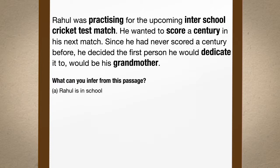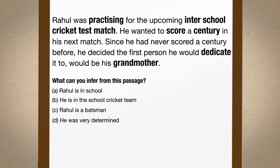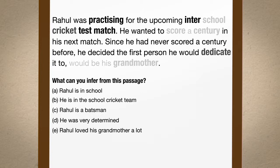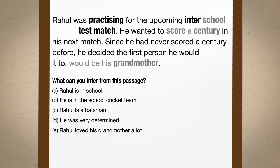Rahul is in school. He is in the school cricket team. Rahul is a batsman. He was very determined. Rahul loved his grandmother a lot. Even though the information is not clearly detailed, we can use the information that is given to deduce or infer this.